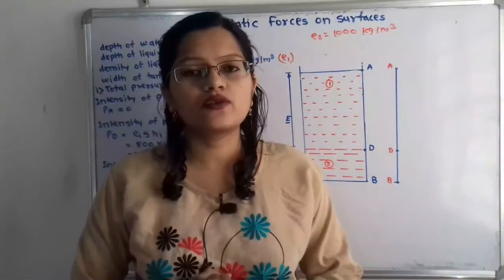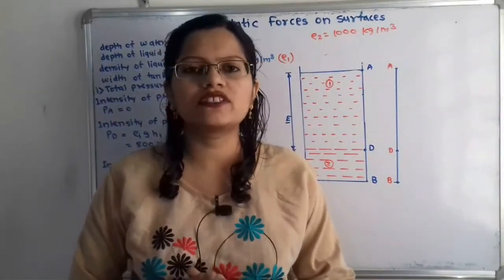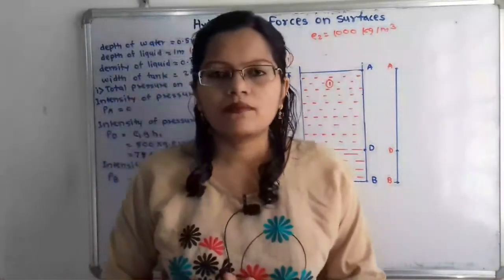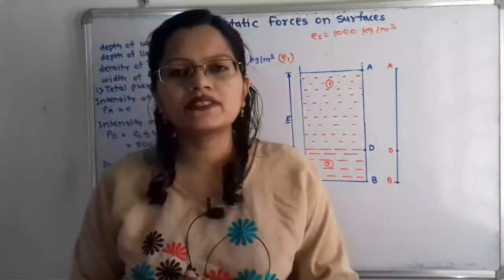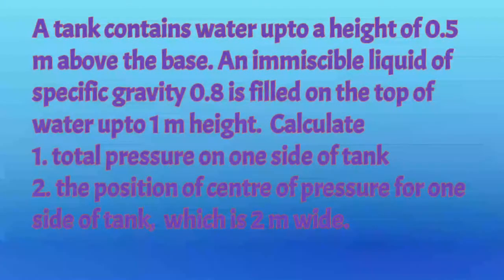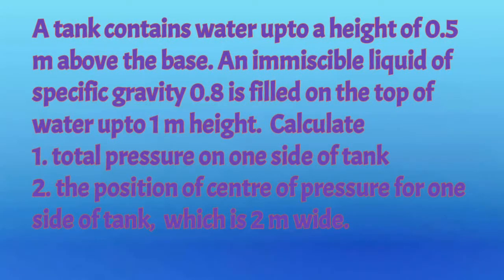Hello friends, this is Priyanka. Today we are going to solve a problem on hydrostatic forces on surfaces. In this video, we are going to solve a problem about the forces applied by two immiscible liquids on the surface of a tank. The problem states: a tank contains water up to a height of 0.5 meter above the base, and an immiscible liquid of specific gravity 0.8 is filled on top of the water up to 1 meter height. Calculate the total pressure on one side of the tank and the position of the center of pressure for one side of the tank, which is 2 meters wide.